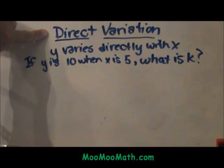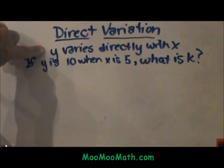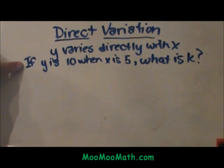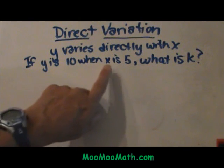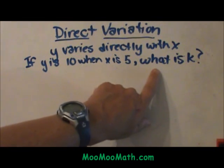Here is an example of what we are looking at. When y varies directly with x, that is a direct variation. Here is our example problem. If y is 10 when x is 5, what is k?